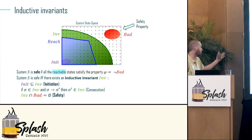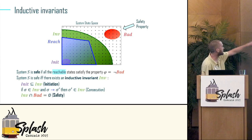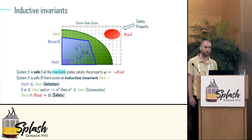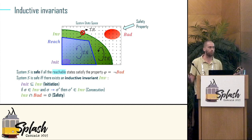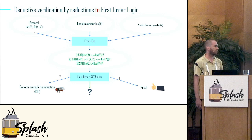Before that, we use inductive invariants — a standard notion. The inductive invariant covers all the reachable states, is closed under transition, and cannot reach a bad state. We have these three formulas in the middle that satisfy those requirements.